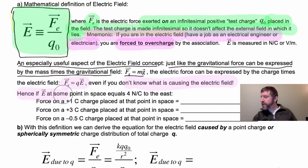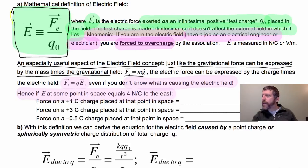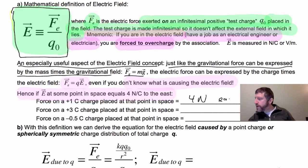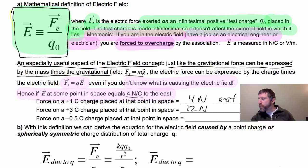For example, if the electric field is 4 newtons per coulomb pointing east, the force on a 1 coulomb charge will be 4 newtons pointing east. The force on a positive 3 coulomb charge will be qE = 12 newtons, also pointing east — the force points in the same direction as the field for positive charges.